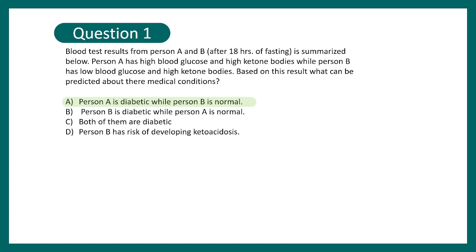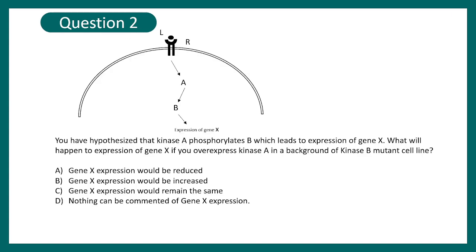Because if he is fasting for 18 hours, all the glucose is depleted, even the glycogen stores would be possibly depleted by that time. So body would generate ketone bodies as an alternative energy source. So person B is completely normal while person A is diabetic. That's the correct answer.